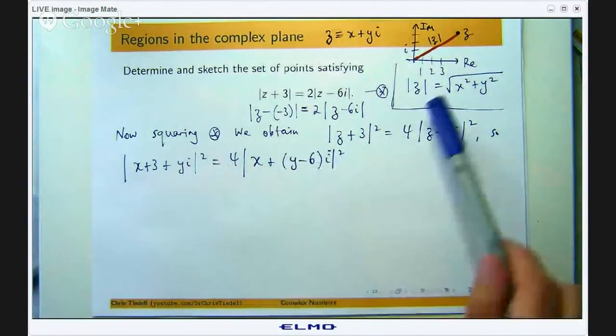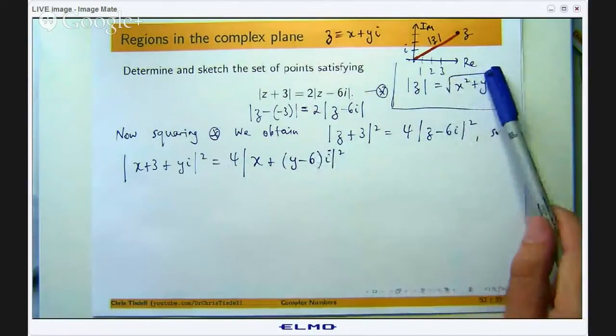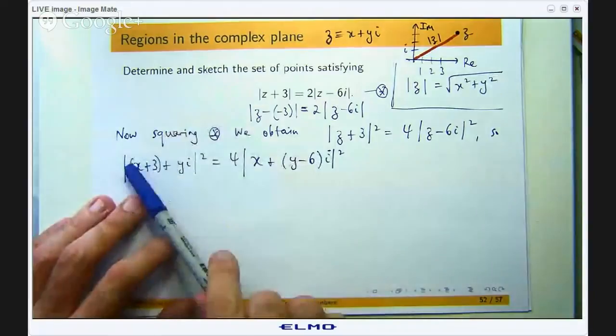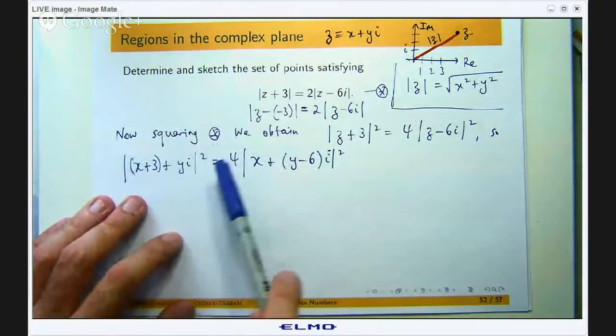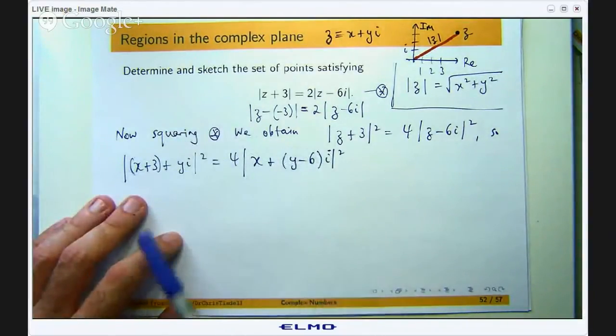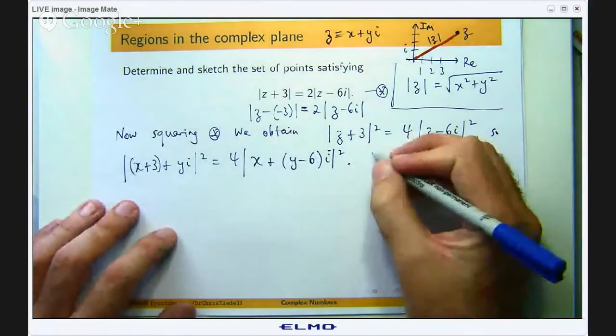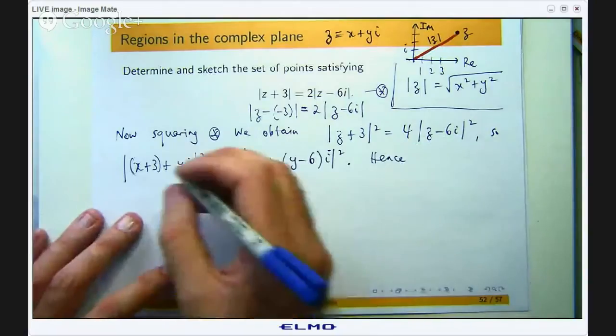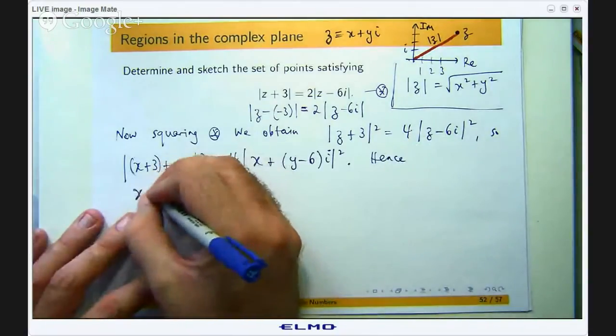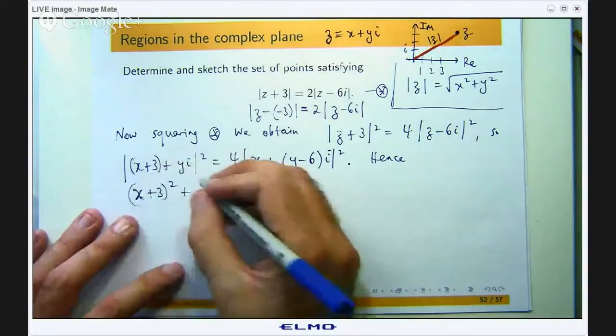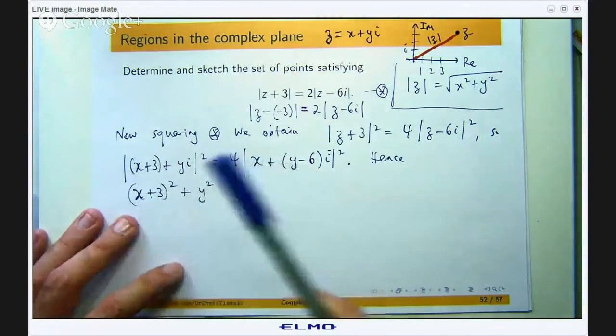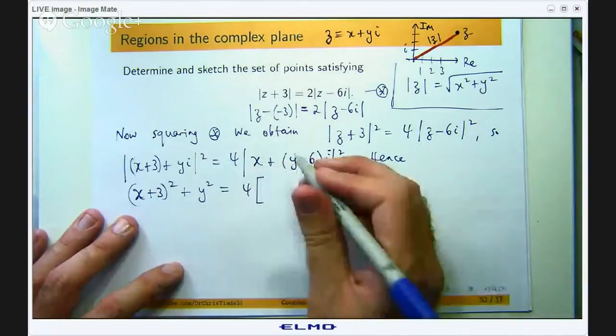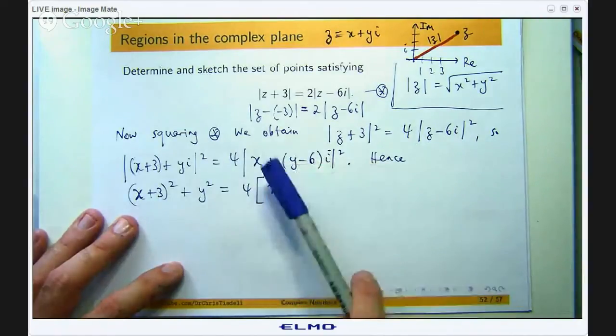Now because I have got the square of these things I can basically square up here and here and I will just have the square of this plus y squared equals 4 times the square of this plus the square of this. So I am going to square that x plus 3, I am going to add the square of the coefficient of i, I am going to square that x and I am going to square the coefficient of i here.